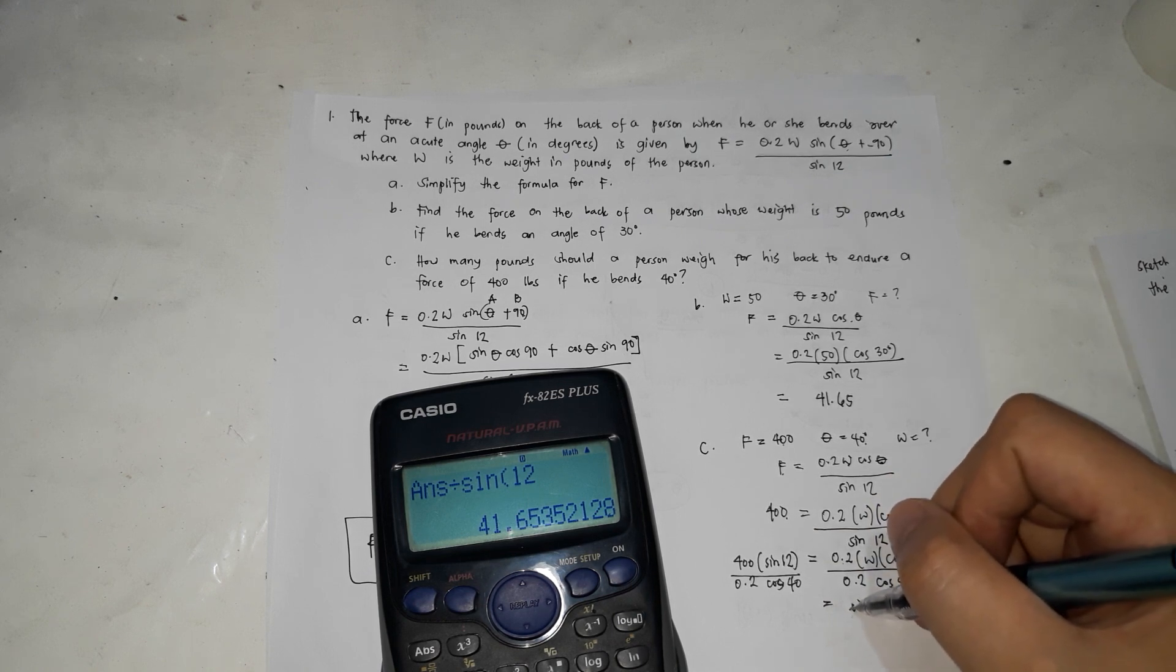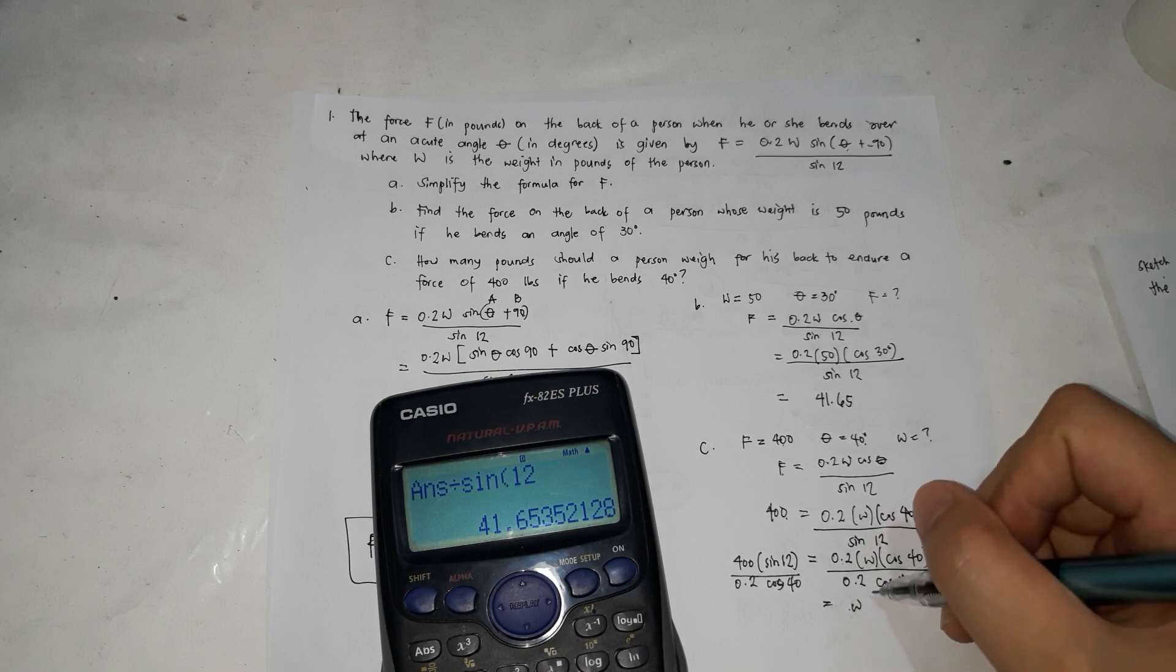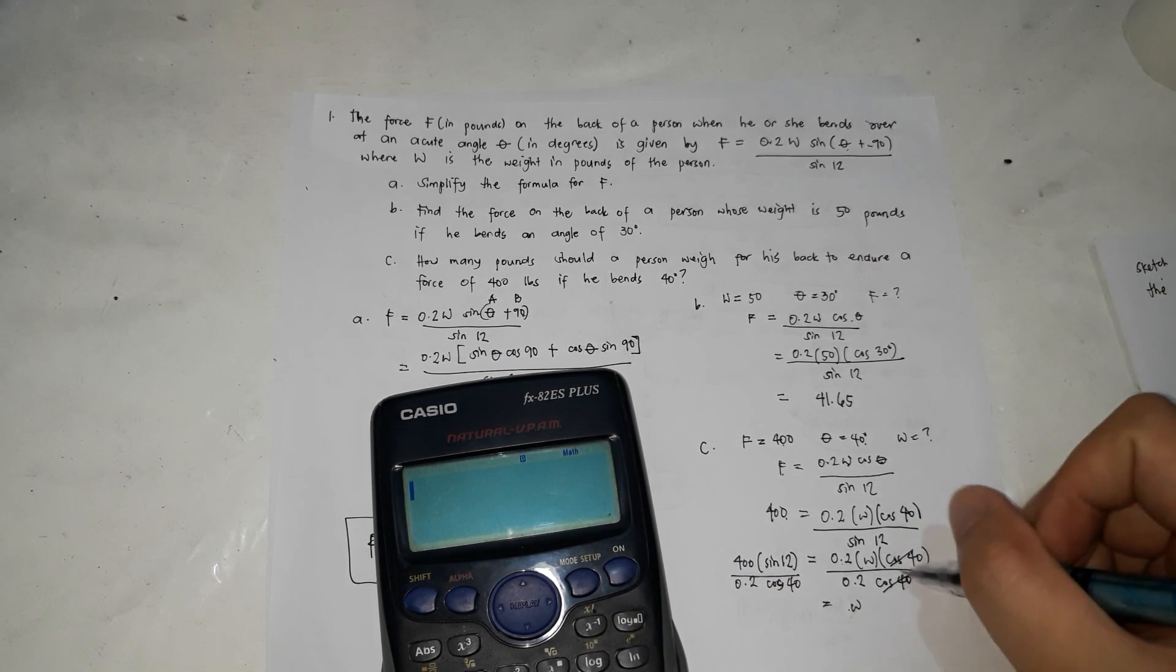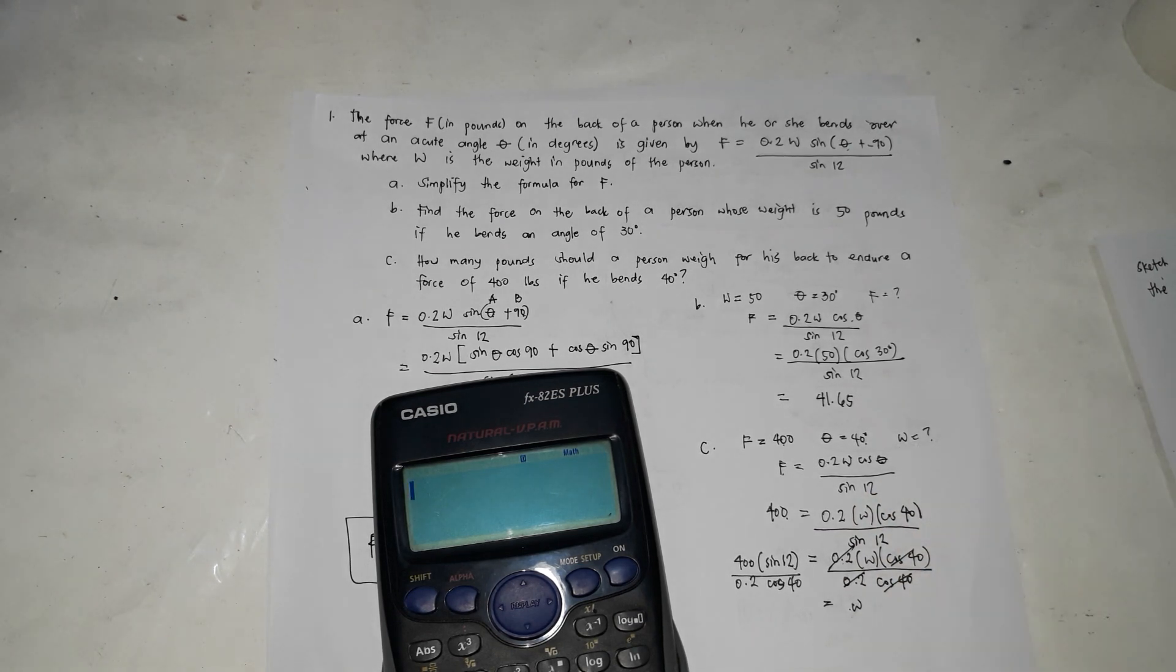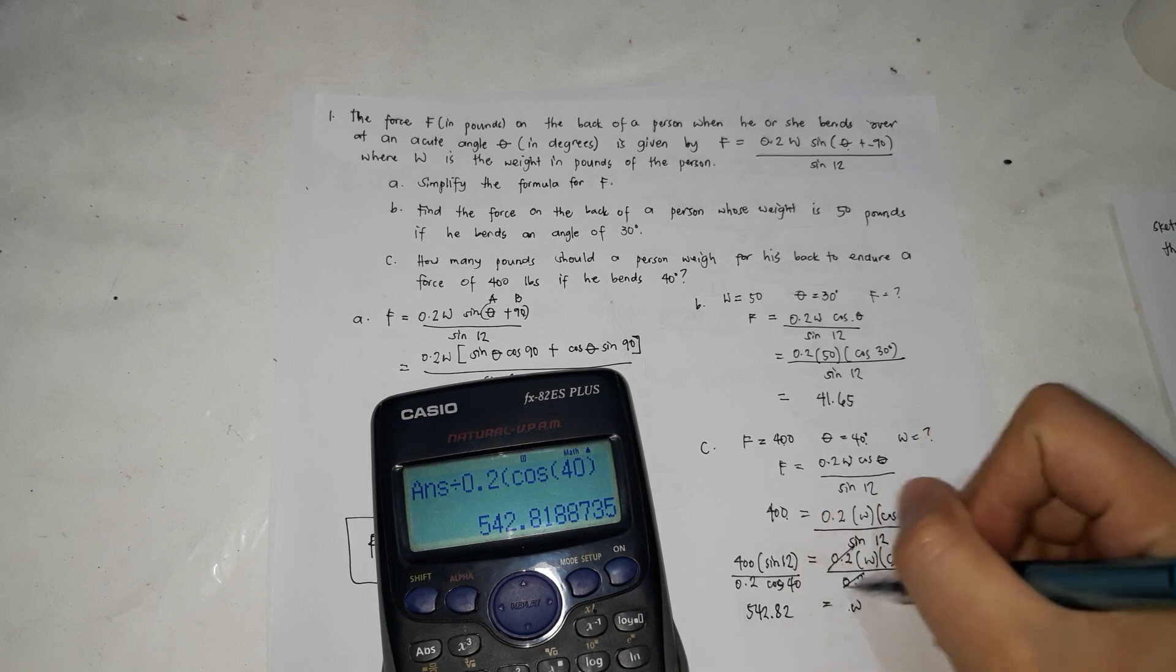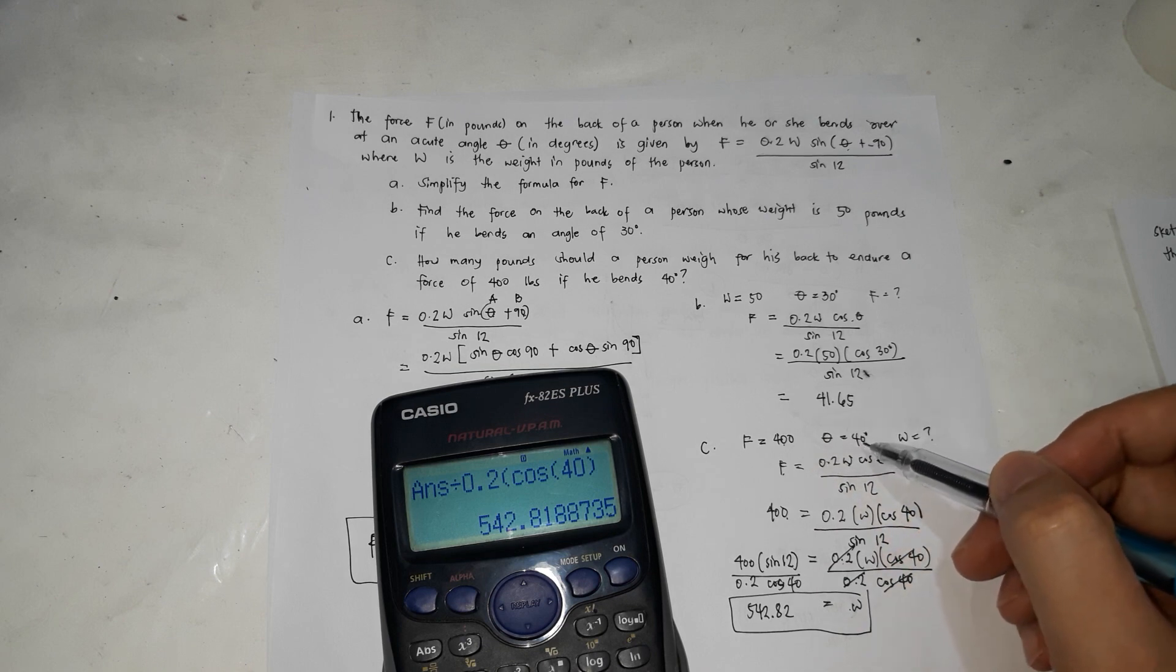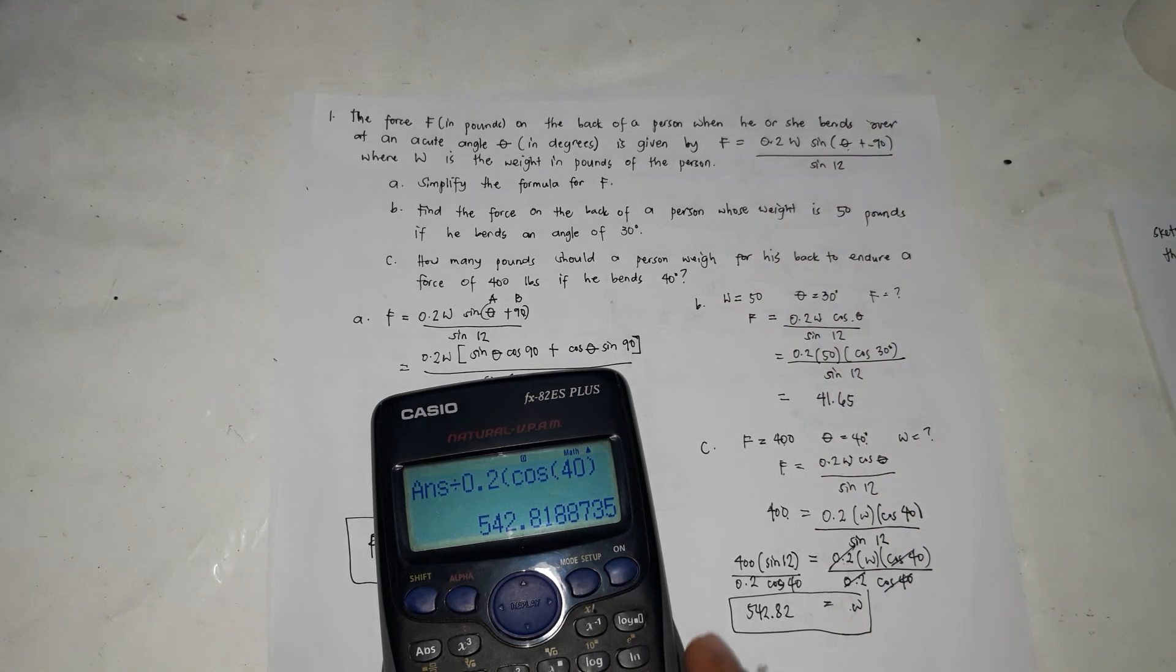So W equals 400 times sine 12 divided by 0.2 times cosine 40. Calculating this in the calculator: 400 times sine 12 divided by 0.2 times cosine 40. The answer is 542.82. So this should be the weight in order for the force to be 400 at a 40 degree angle. That's how we're going to solve for it.